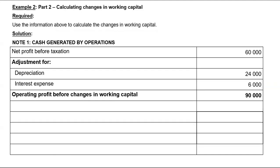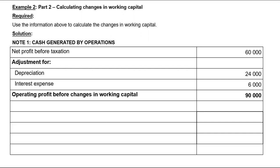This is what we got from Example 1. In Example 1, we had $60,000 as profit before tax. We had to add depreciation of $24,000 and add interest expense of $6,000. The reason we do that is because depreciation is a non-cash item and interest expense must be shown separately on the face of the cash flow statement. Going back to inventories, our inventory decreased, so it will result in a cash inflow — a decrease means we sold more stock resulting in cash inflow.